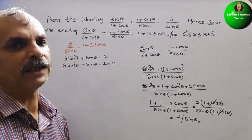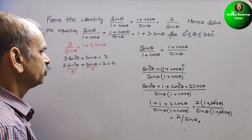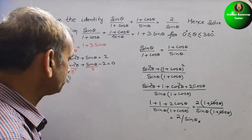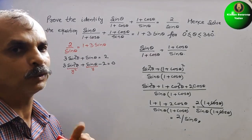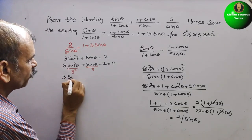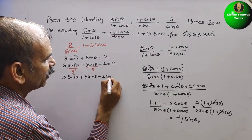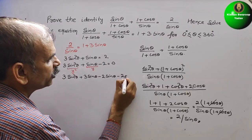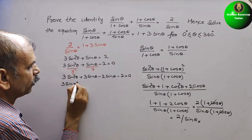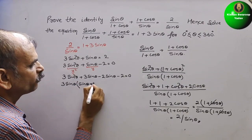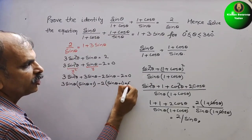We take sinθ = y, so this becomes 3y² + y − 2 = 0. We go for middle-term splitting: 3 × 2 = 6, and we need factors that give +1. So we split as 3sin²θ + 3sinθ − 2sinθ − 2 = 0. Factoring: 3sinθ(sinθ + 1) − 2(sinθ + 1) = 0.